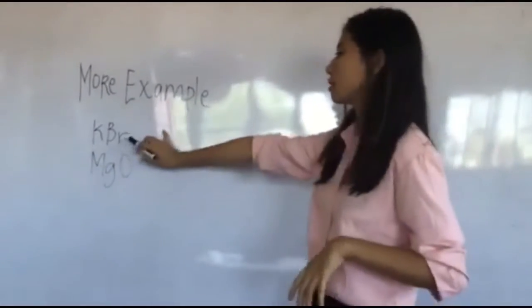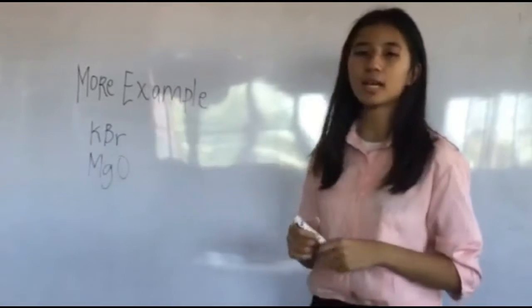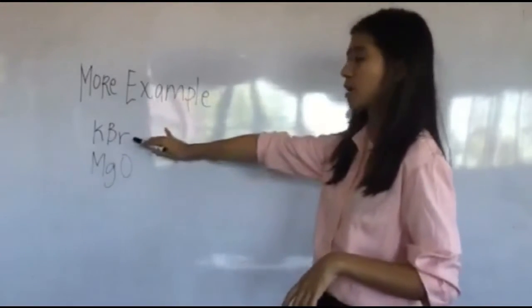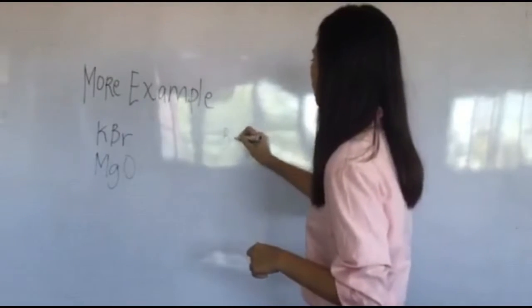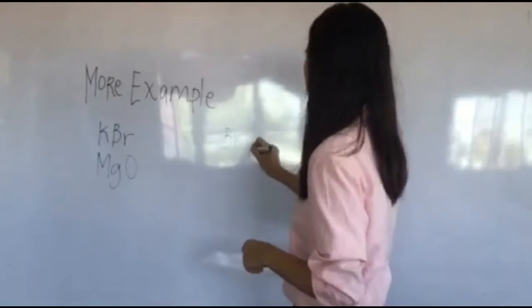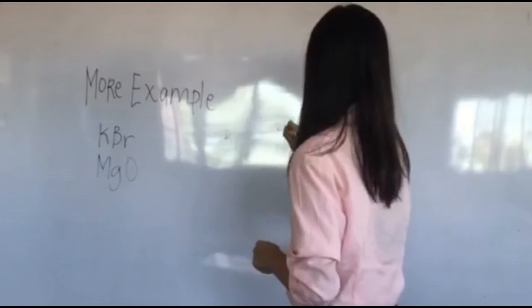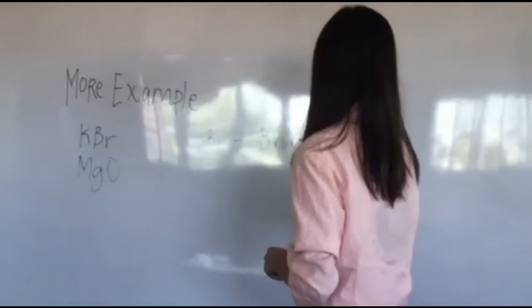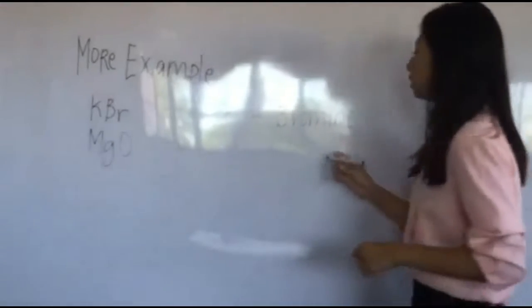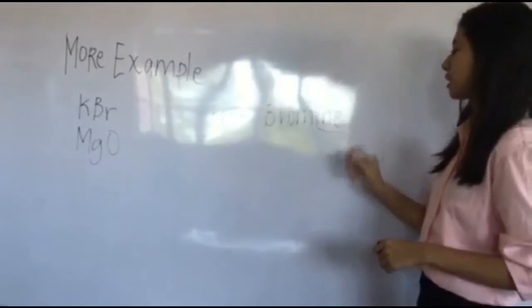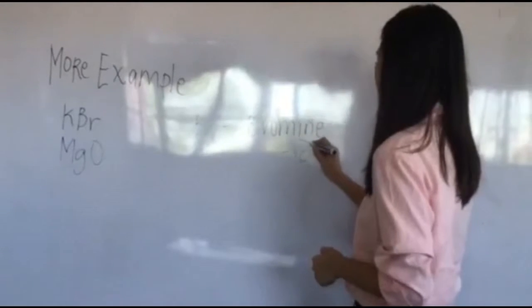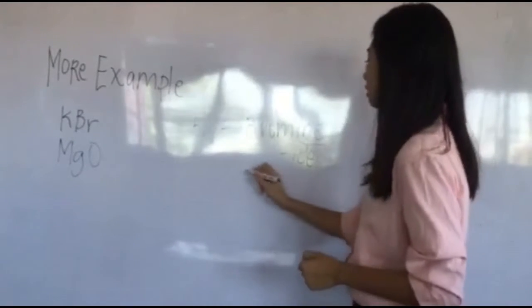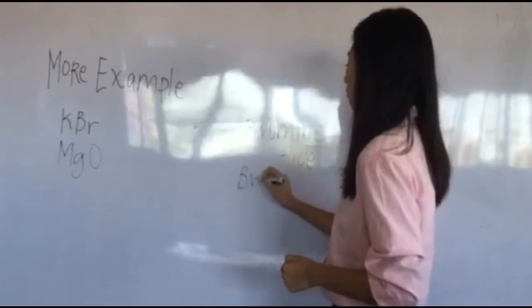First, we are going to answer KBr. Just like a while ago, take the second element, which is Br, meaning bromine. Remove the three last letters and add I-D-E, which is now bromide.